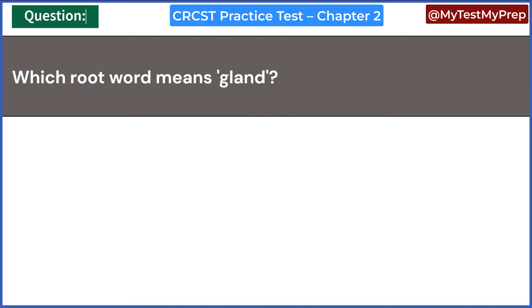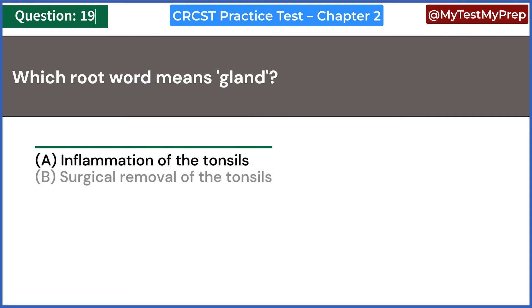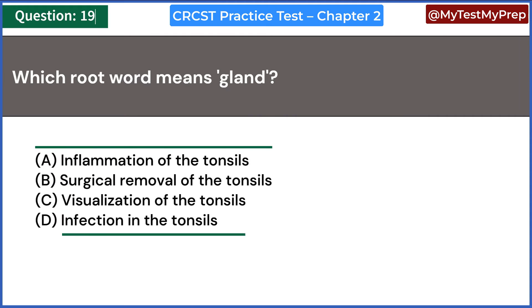Which root word means gland? A. Artha. B. Adeno. C. Asca. D. Skippy. Answer: B. Adeno.